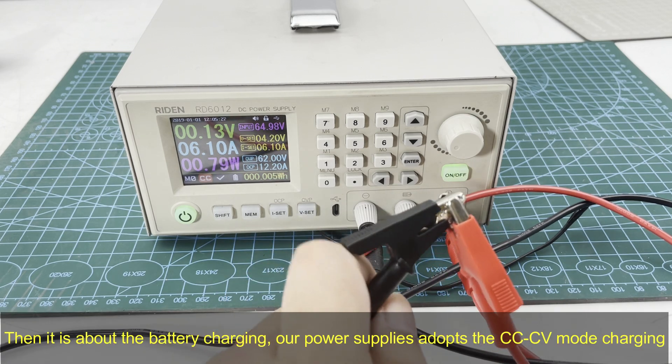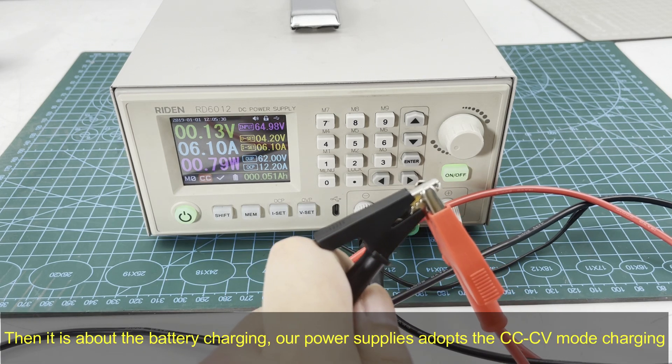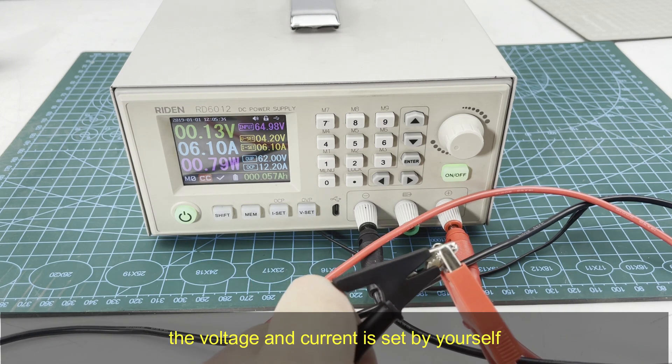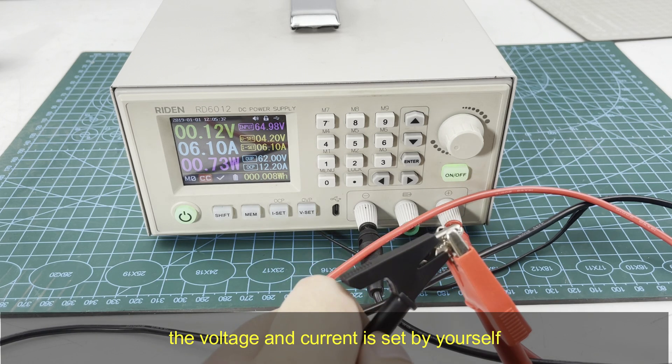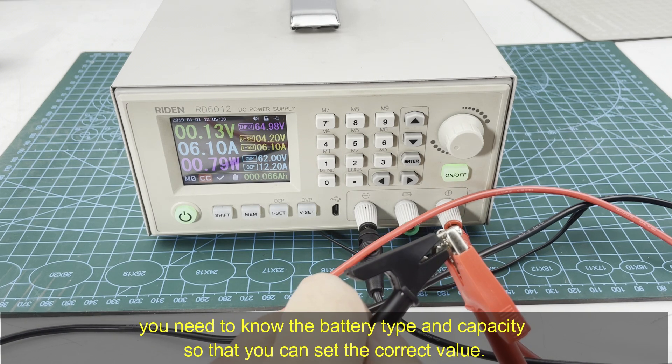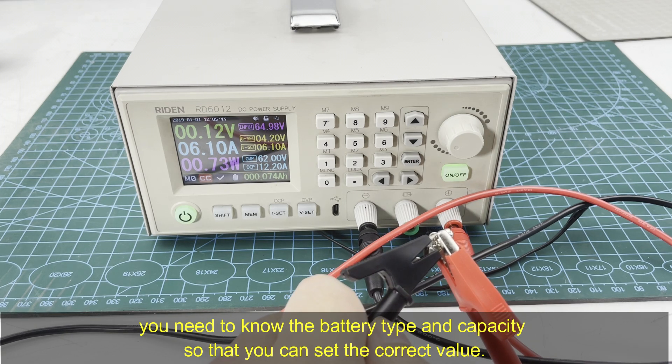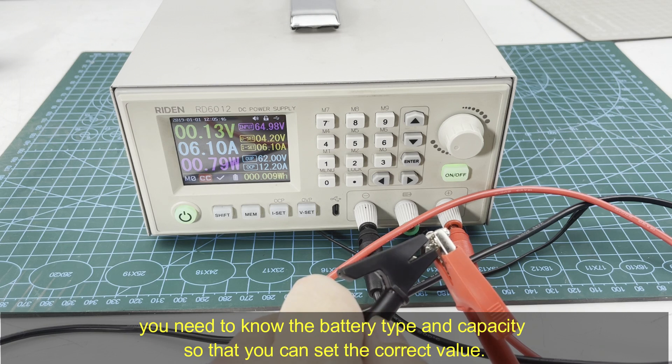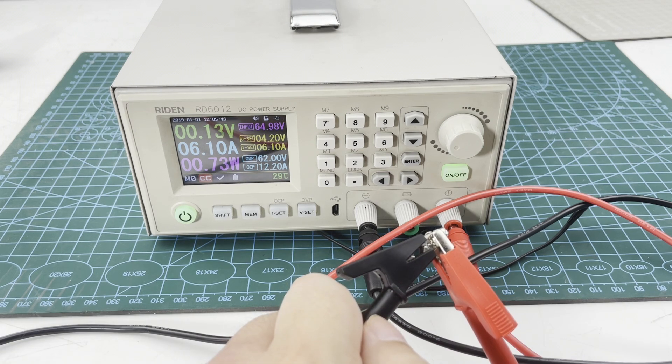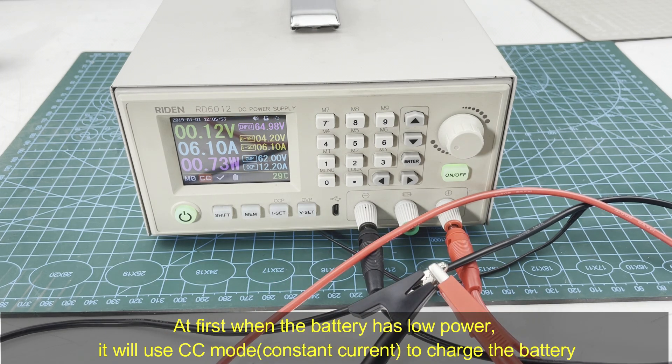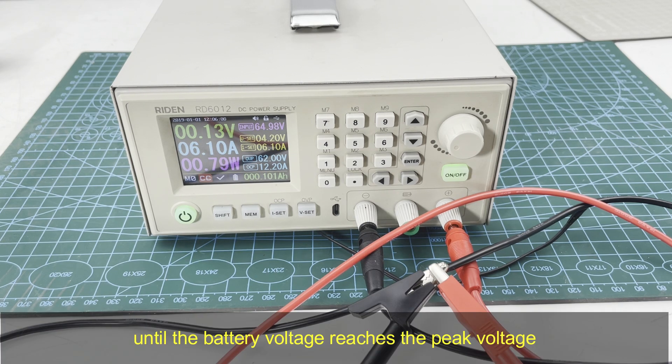Then it is about battery charging. Our power supplies adopt CC to CV mode charger, and the voltage and current is set by yourself. You need to know the battery type and capacity to set the right value. At first, when the battery has low power, it will use CC mode to charge the battery until the battery voltage reaches the peak voltage.